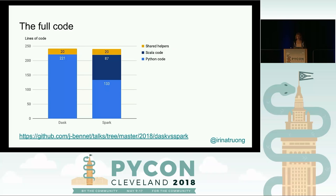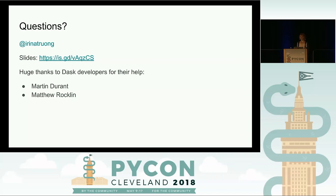On code volume, it took me about 240 lines to write this. For the Spark side, a big chunk is the custom aggregation which I had to write in Scala, and Scala is quite verbose. You can see the full code in the repo, and my slides are shared at the link shown. Big thanks to Dask developers for their help.